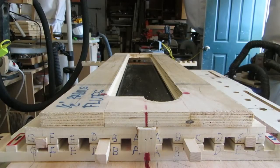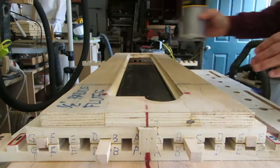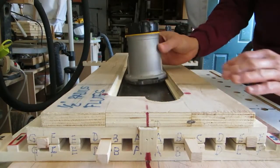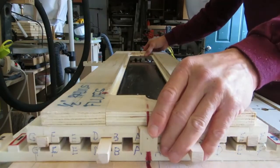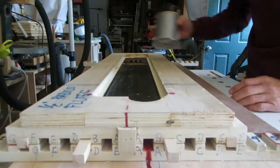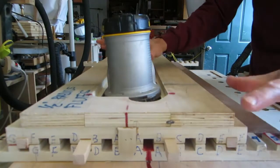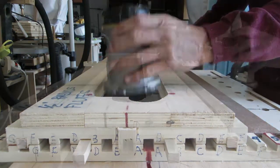This is a dry run of the indexing. So if I have my router on, I run it across, route, take it off, index if I'm going in this direction, route it again. There's nothing that needs to be clamped down or anything like that.